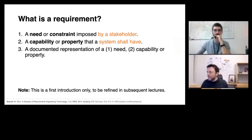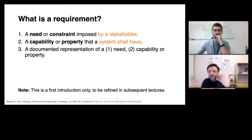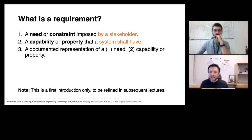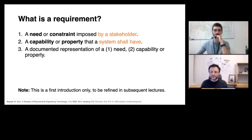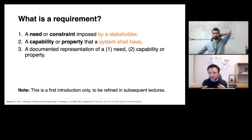What we mean by that is that a requirement can be something very high-level — a high-level need. For example, 'I need to change my IT landscape because it doesn't comply with GDPR.' And from that, I can infer specific, detailed requirements dedicated to, for example, how the system shall store the data, how the system shall process the data. So: a need by a stakeholder and a property that a software system shall have.